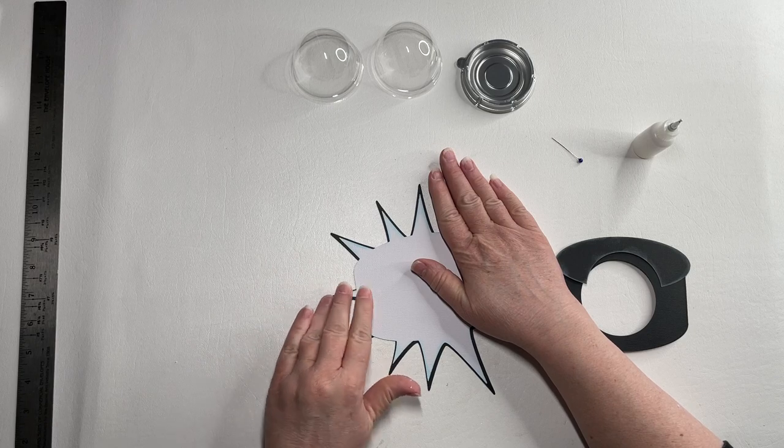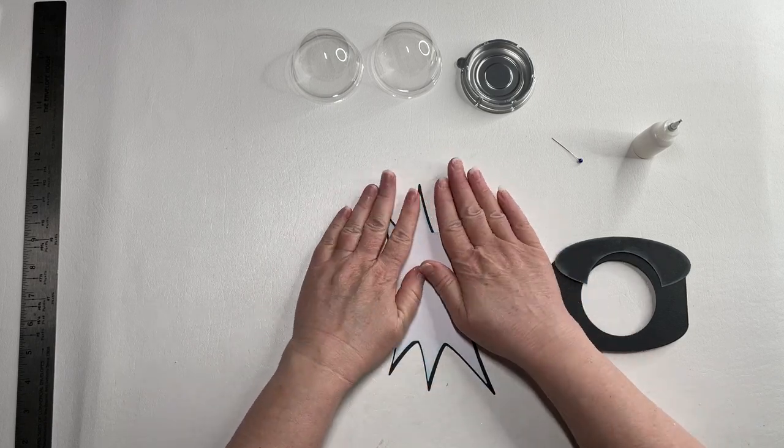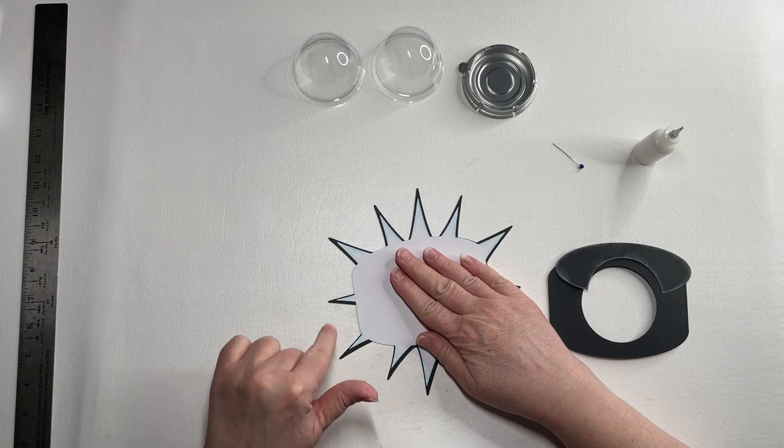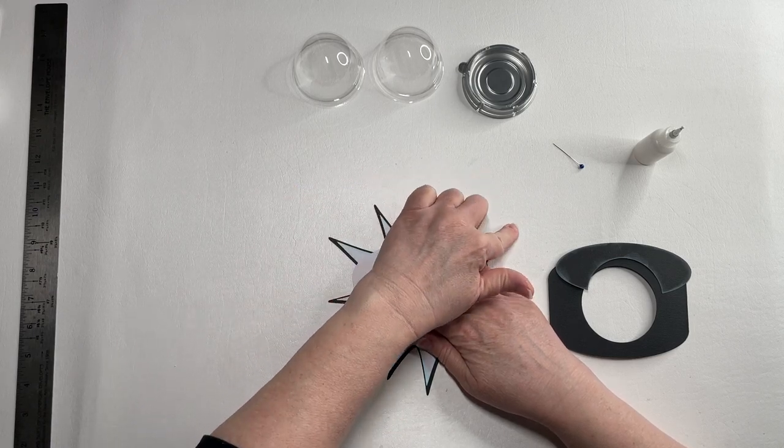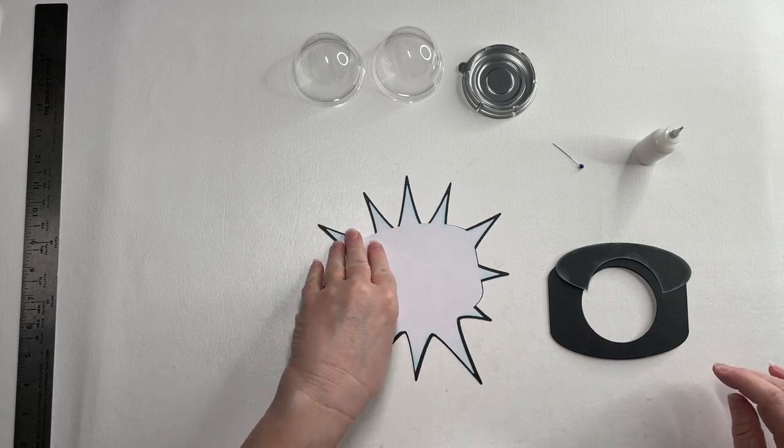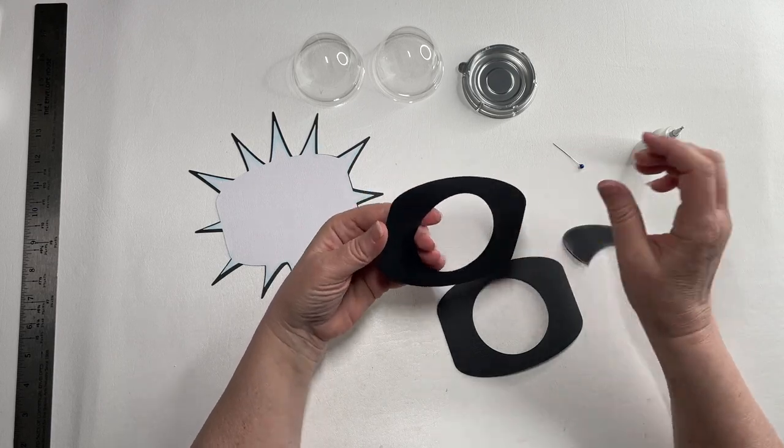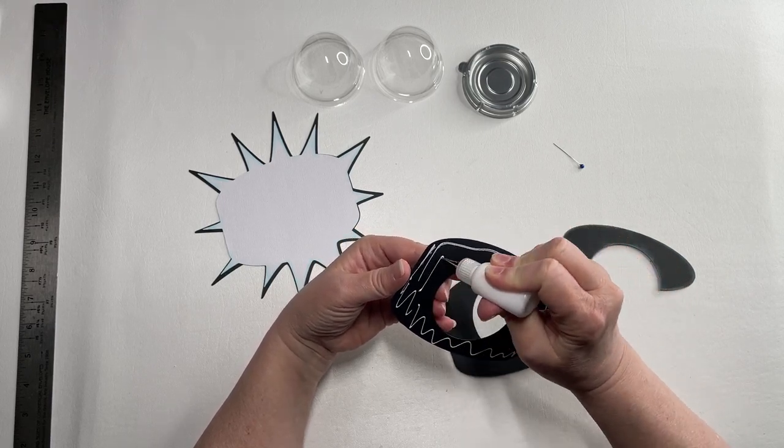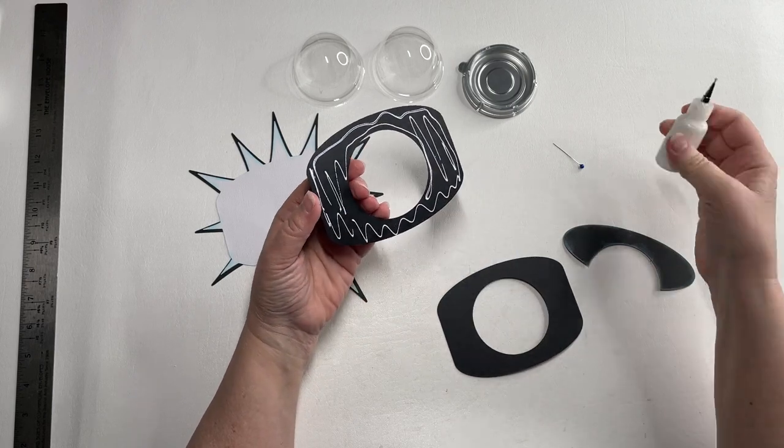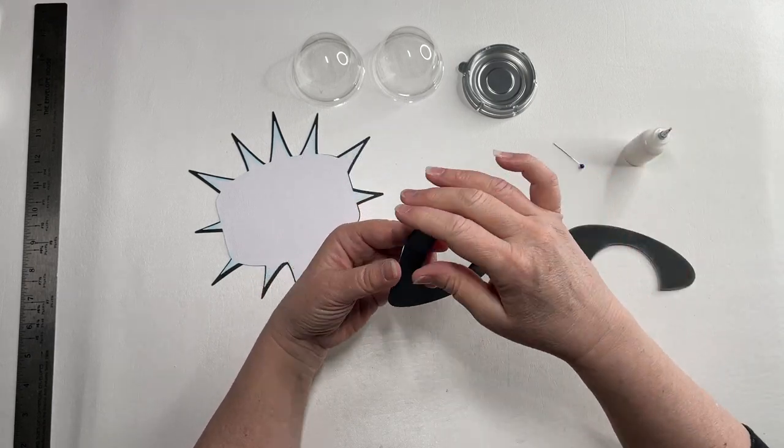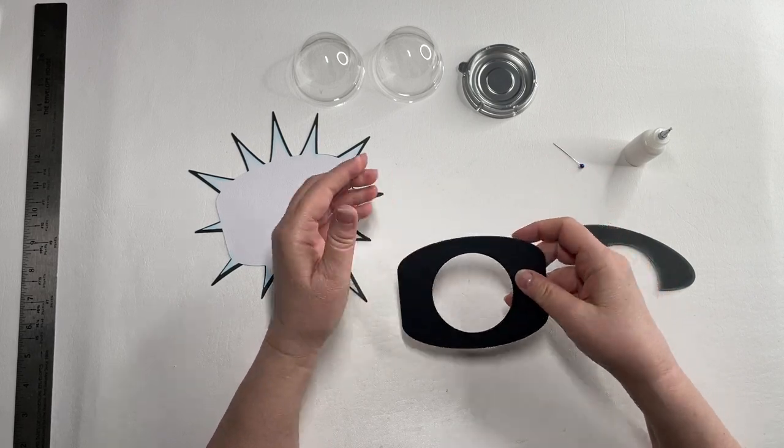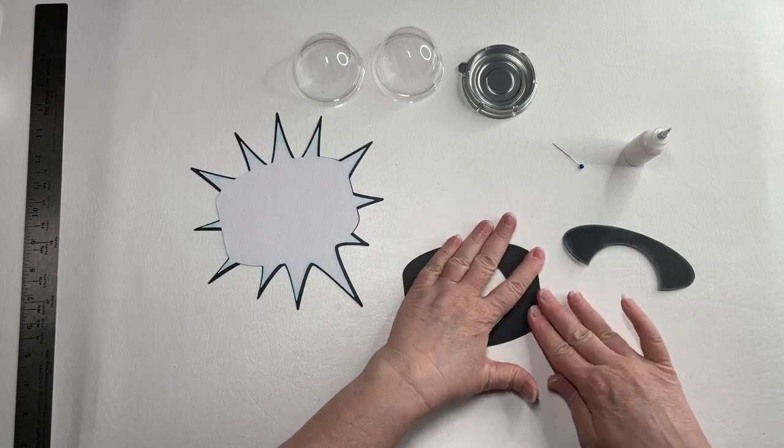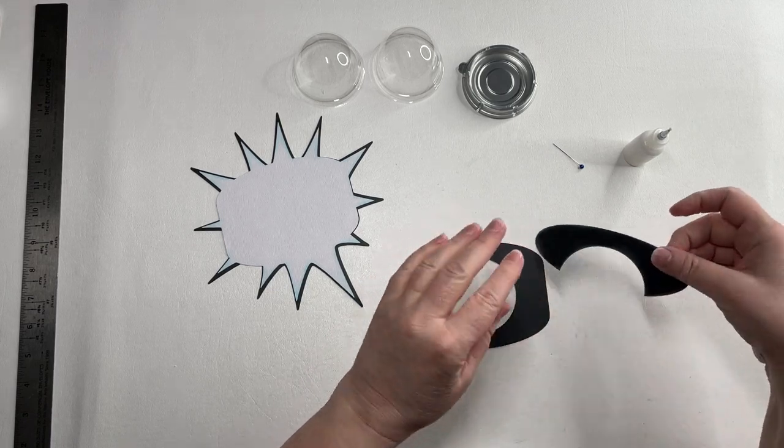So here is our wall. You just want to watch your ends here, make sure they're down good. They get a little bit messed up cutting. And then we've got our two base pieces, and then we have an accent piece.